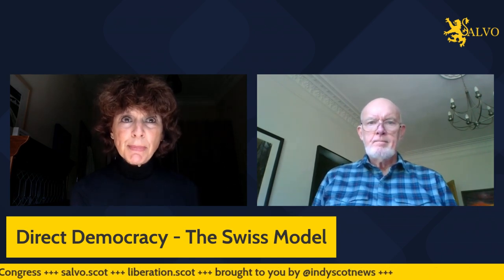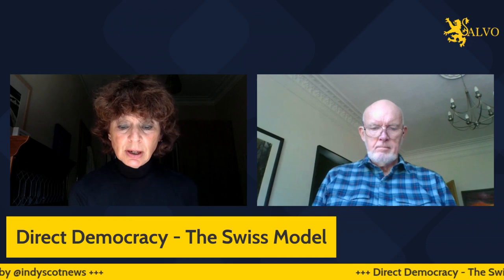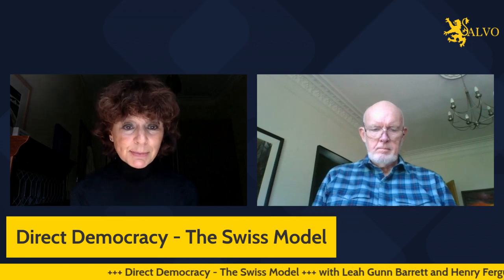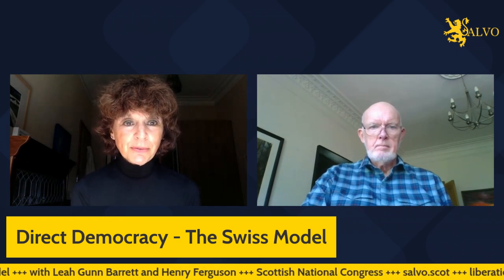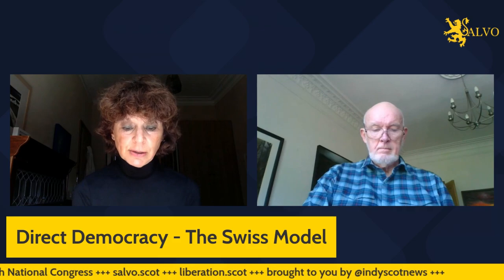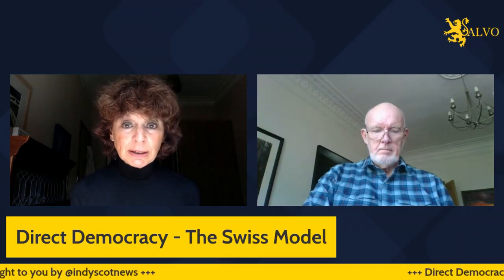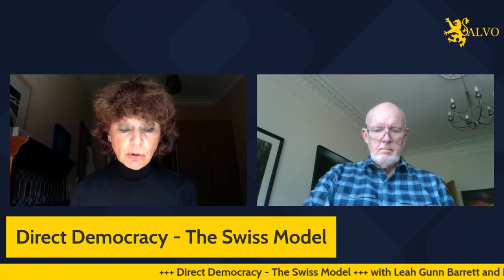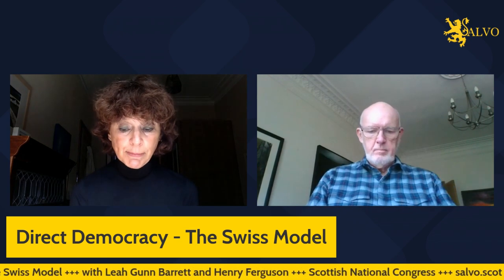Swiss direct democracy means the people control the constitution, and with the cantons, changes to the constitution. The people can reject government legislation and decrees, and ultimately control parliament and the government — they control the political agenda. What a breath of fresh air that would be if we could apply that to Scotland. The aim of Liberation Scotland is to invert the pyramid and put the people back on top, like they are in Switzerland. We'll do that by reclaiming our constitution, which still has legal effect. It's how we can remove the British state's control over our land, our resources, and our people — in essence, it's how we take back control of our nation.